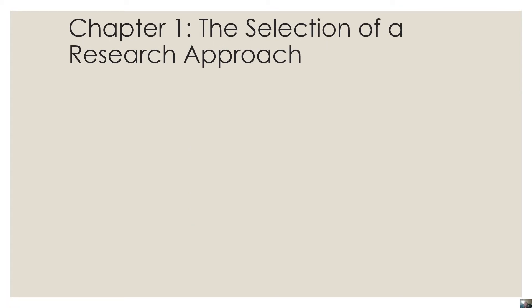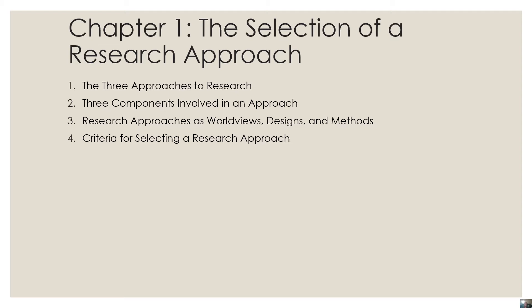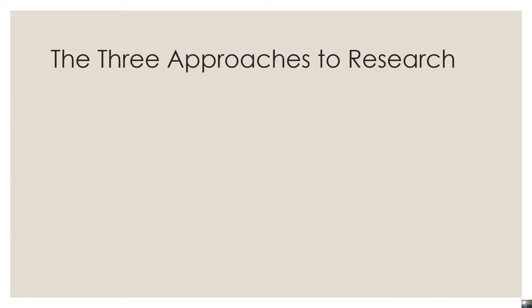So for Chapter 1, the Selection of a Research Approach, we have: Number 1, the Three Approaches to Research. Number 2, Three Components Involved in an Approach. Number 3, Research Approaches as World Views, Designs, and Methods. Number 4, Criteria for Selecting a Research Approach. And then a Summary. These will be the five lessons for Chapter 1.